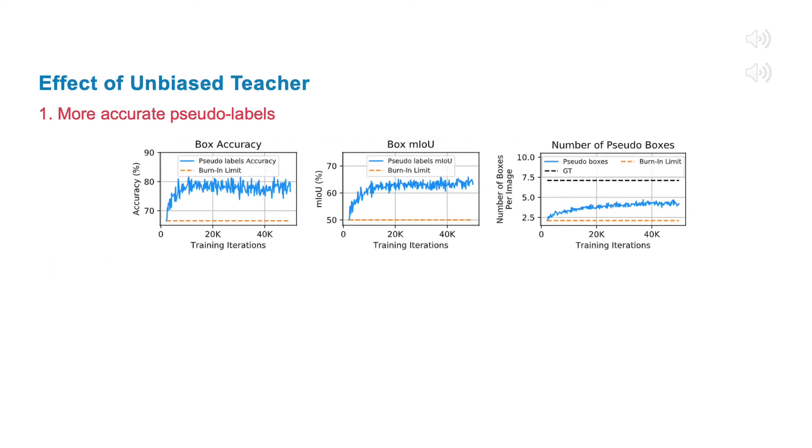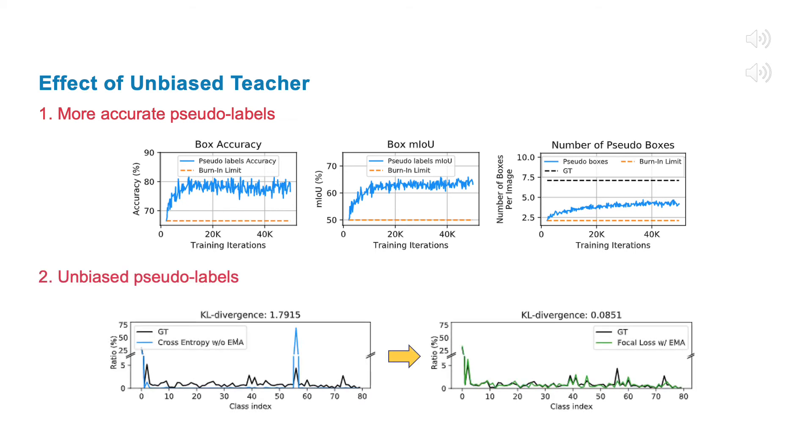With our proposed mutual learning mechanism, we can get more accurate pseudo-labels. Also, with the focal loss and EMA, we can alleviate the pseudo-label bias issue and produce unbiased pseudo-labels from the teacher model.